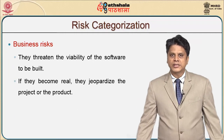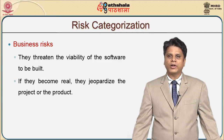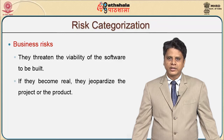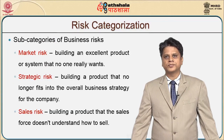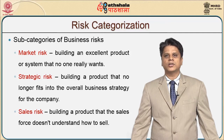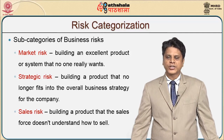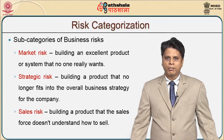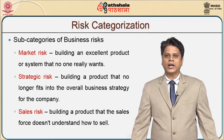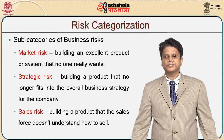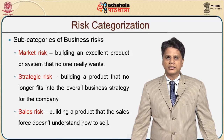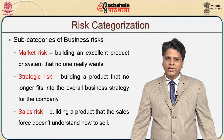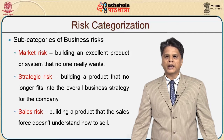The third category is business risk, wherein we are threatened because of the viability of the software we are about to build. If this becomes real, it jeopardizes the project or the product. Within business risk, we have various subcategories. One is market risk — if we build an excellent product or system that the customer does not really want, then it becomes a market risk. We do not understand the strategy behind why we need to market this product.